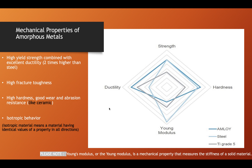It also has isotropic behavior, which means a material having identical values of a property in all directions. In the picture provided, you can notice a scale comparing amorphous metal alloys with steel and with Ti Grade 5. Strength, hardness, ductility, and Young's modulus are compared. Young's modulus is a mechanical property that measures the stiffness of a solid material. The amorphous alloy had greater hardness, strength, and ductility than these two; however, its stiffness was notably less than that of steel, with almost a slight difference compared to Ti Grade 5.